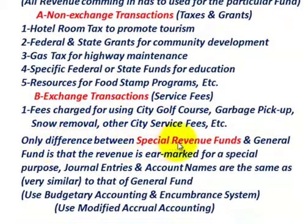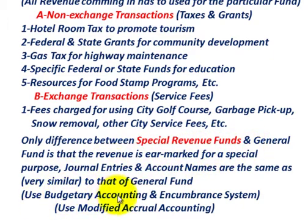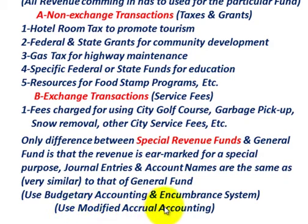The only difference between a Special Revenues Fund and the General Fund is that the revenues in the Special Revenues Fund are earmarked for a specific purpose. The journal entries and account names are the same as or very similar to those of the General Fund. With the Special Revenues Fund, as with the General Fund, you use budgetary accounting for inflows, outflows, and appropriations, the encumbrance control system for commitments and purchase orders, and modified accrual accounting.